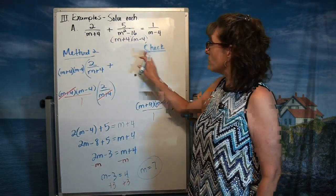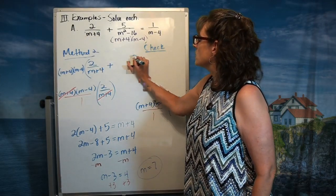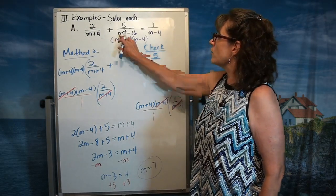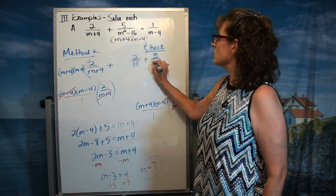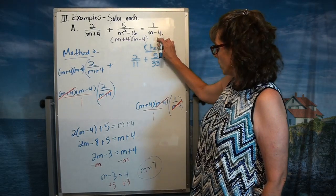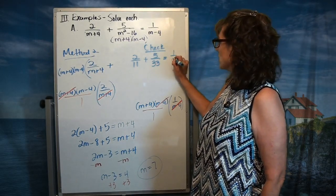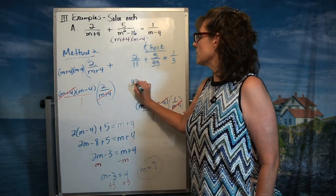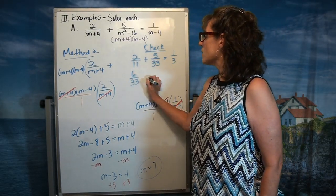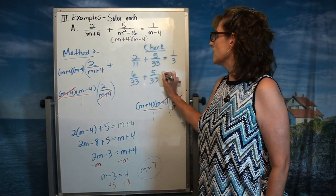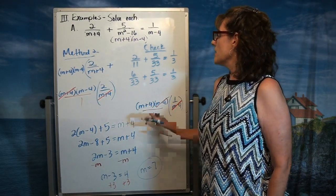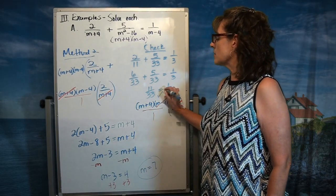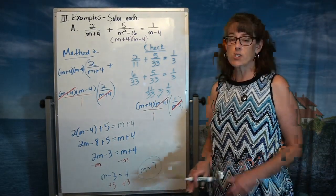When we go to check this and put the 7 in, we'll get 2 over 11 — because 7 plus 4 is 11 — plus 5 over 33 — because 49 minus 16 is 33 — equals 1 over 3, because 7 minus 4 is 3. The common denominator for the left side is 33, so this gives us 6 over 33 plus 5 over 33 equals 1 third. Six and five is 11, and 11 over 33 does simplify to 1 third. So we know that our answer of m equals 7 is correct.